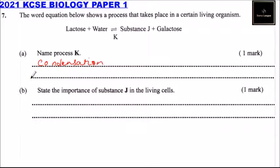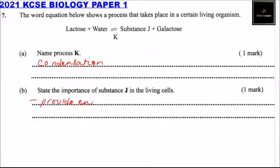Part B: State the importance of substance J in the living cells. Substance J provides energy during respiration.